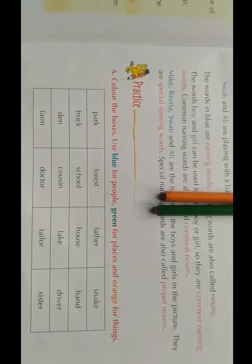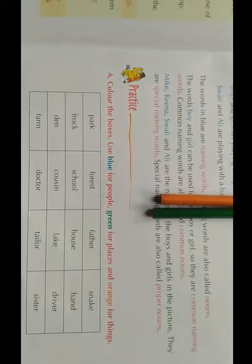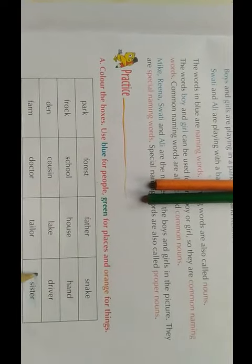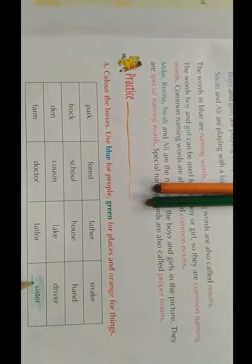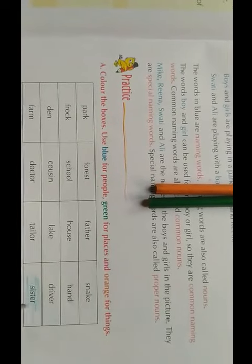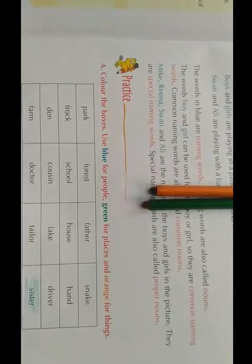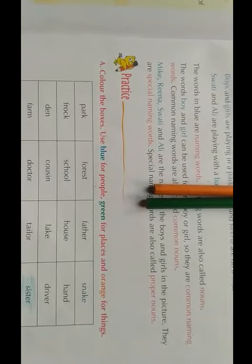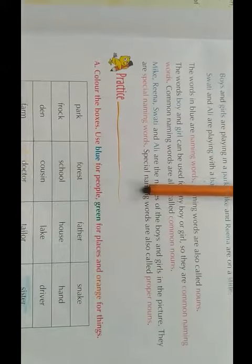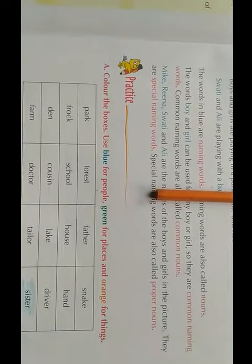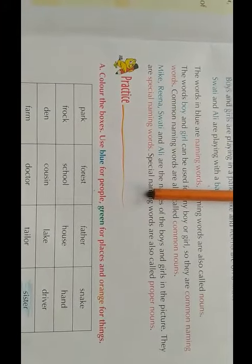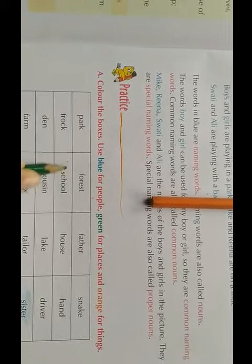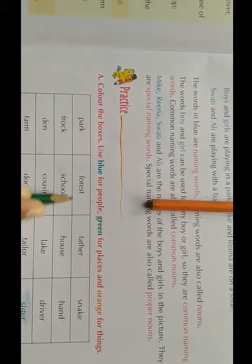You have to find out the examples of people. For example, sister — we will color it blue. Likewise, you have to find out all the persons in the box and color them blue. Next we will take green color. We will color all the places with green. For example, school — I have colored school.